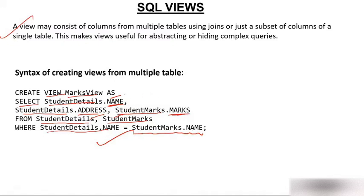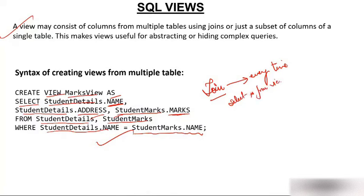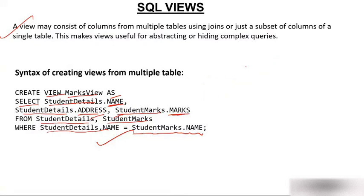If you are running a join query, you need to write the entire code every time. But by creating a view, you simply do SELECT * FROM view. Once you create a view, you can hide the complex query — you need not write the entire code every time.